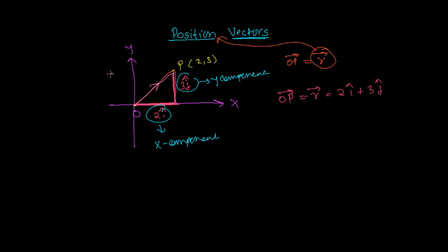Similarly, if you have another point, this is point Q. So that time this OQ will be the position vector of Q. Similarly, if you have, let's say this is R, then this OR is the position vector of this point R.